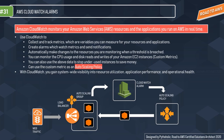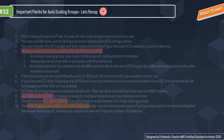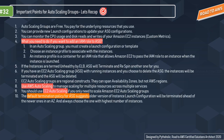Key exam points: Auto Scaling Groups are free - you pay only for the underlying resources. Creating an ASG is free, but spinning up expensive instances will cost you. You can provide new launch configurations to update your ASG, and any new instances will use the new configuration options. You can also monitor CPU usage and disk reads and writes of EC2 instances using custom metrics.